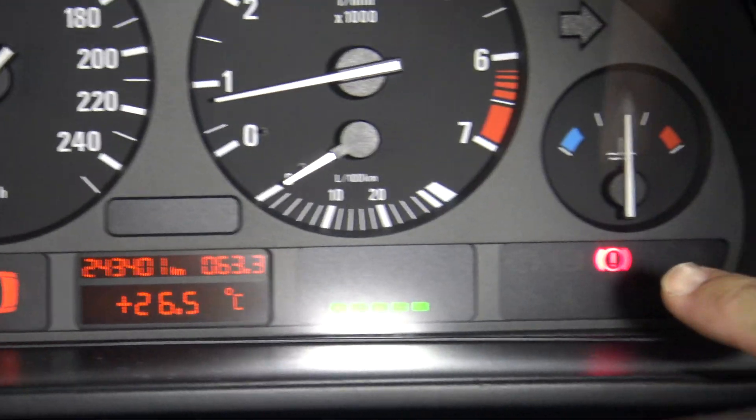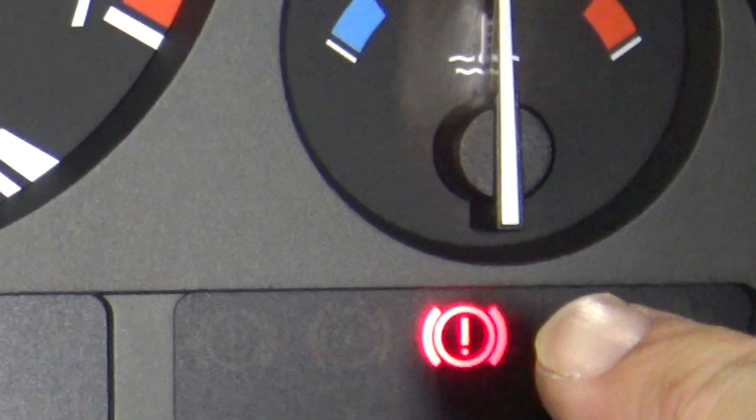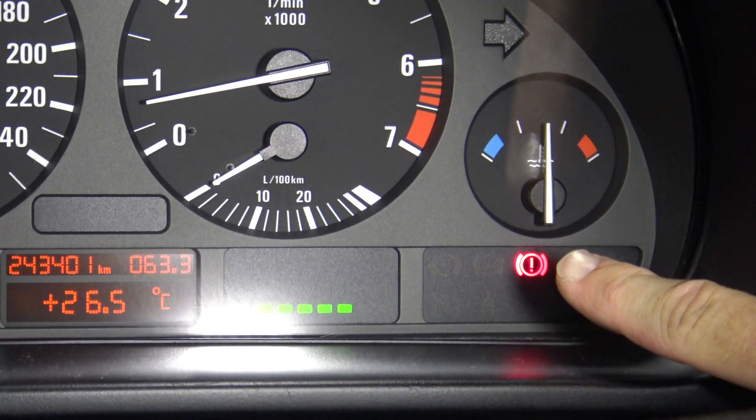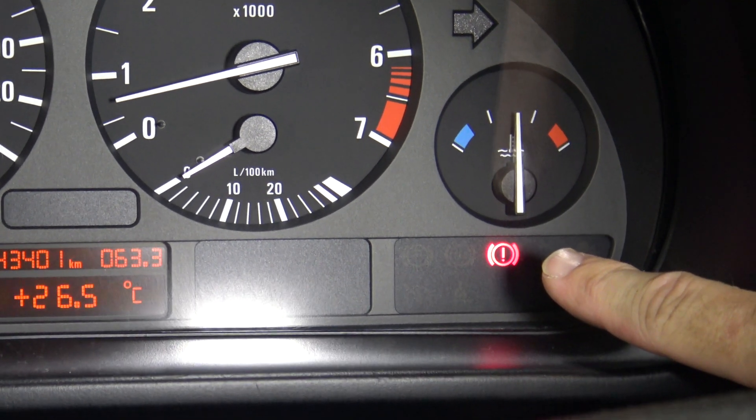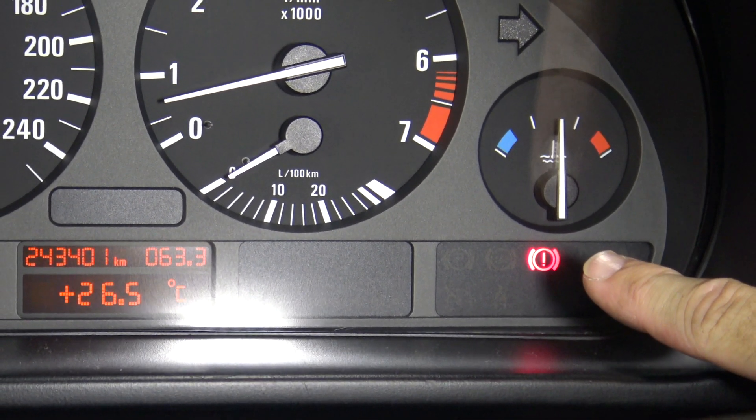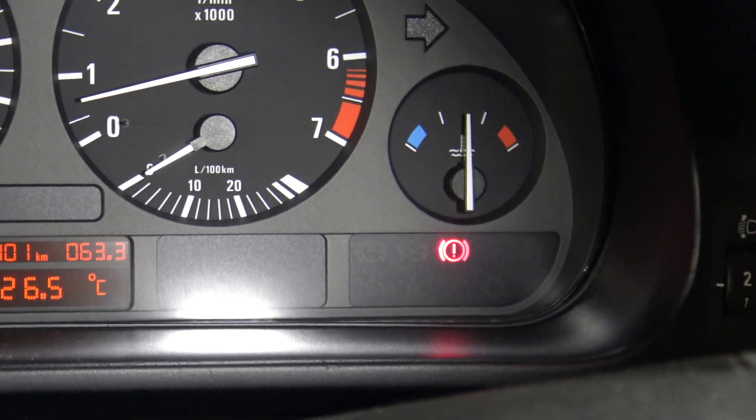If you have the brake warning light that stays on after starting your engine or that appeared while driving, or even turns on and off intermittently, and yet your handbrake is properly released and your car is braking correctly, this video may help you.